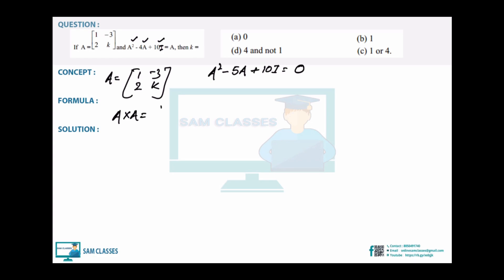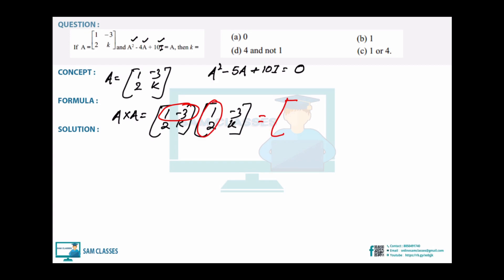Find A² separately. Taking first row × first column: 1×1 + (-3)×2 = 1-6 = -5. Then: 1×(-3) + (-3)×k = -3 - 3k. Then: 2×1 + k×2 = 2 + 2k. And: 2×(-3) + k×k = -6 + k². So A² = [[-5, -3-3k],[2+2k, k²-6]].